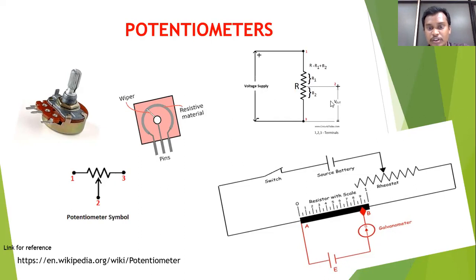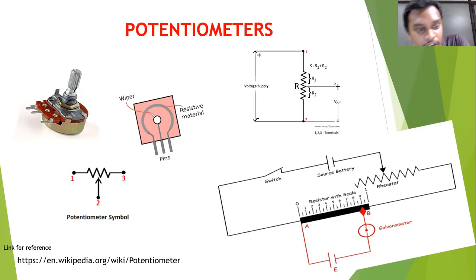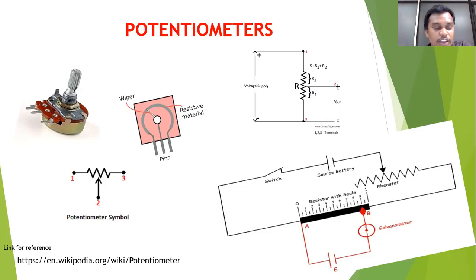The output voltage is expressed in terms of input voltage by the ratio of two resistances. This is the general concept of the pot. We use this pot where the output quantity depends on the variation of voltage. For example, if we want to control the fan speed, we use a voltage regulator — and in that we use a pot.